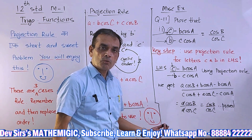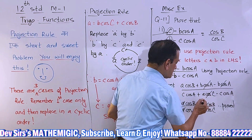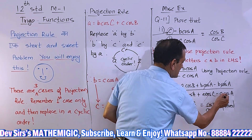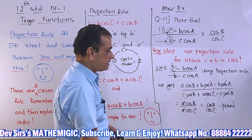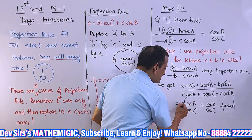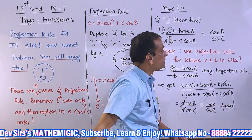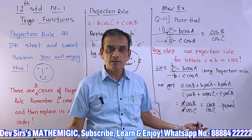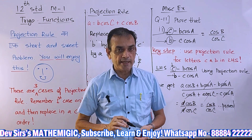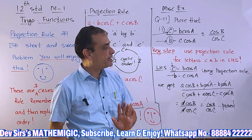Problem is almost over. b cos A gets cancelled, a cos C and c cos A get cancelled. What remains is a cos B / a cos C. Again, a gets cancelled. The answer is cos B / cos C, which is your RHS. Solved! It's a simple sum if you use projection rule. Using the cosine rule would add many more steps and become more complicated.